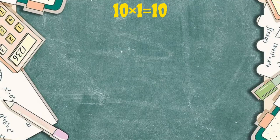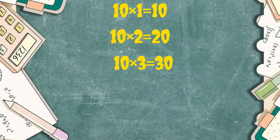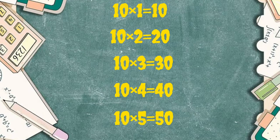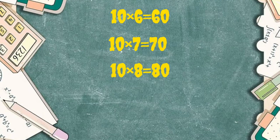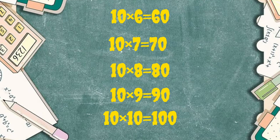Ten ones a ten. Ten twos a twenty. 10 3's are 30. 10 4's are 40. 10 5's are 50. 10 6's are 60. 10 7's are 70. 10 8s are 80. 10 9s are 90. 10 10s are 100.